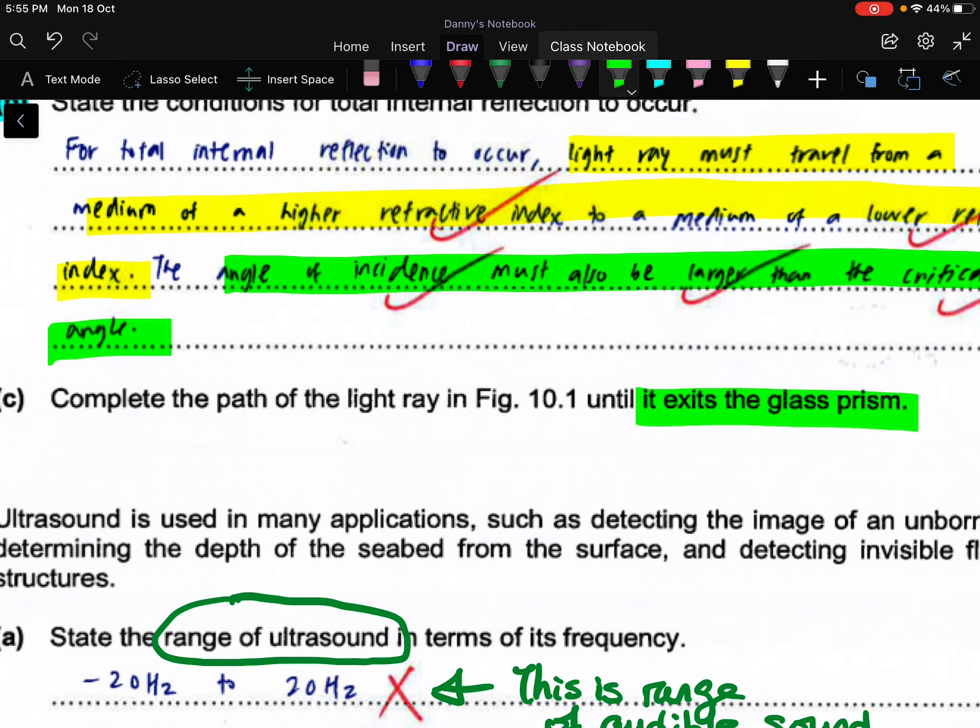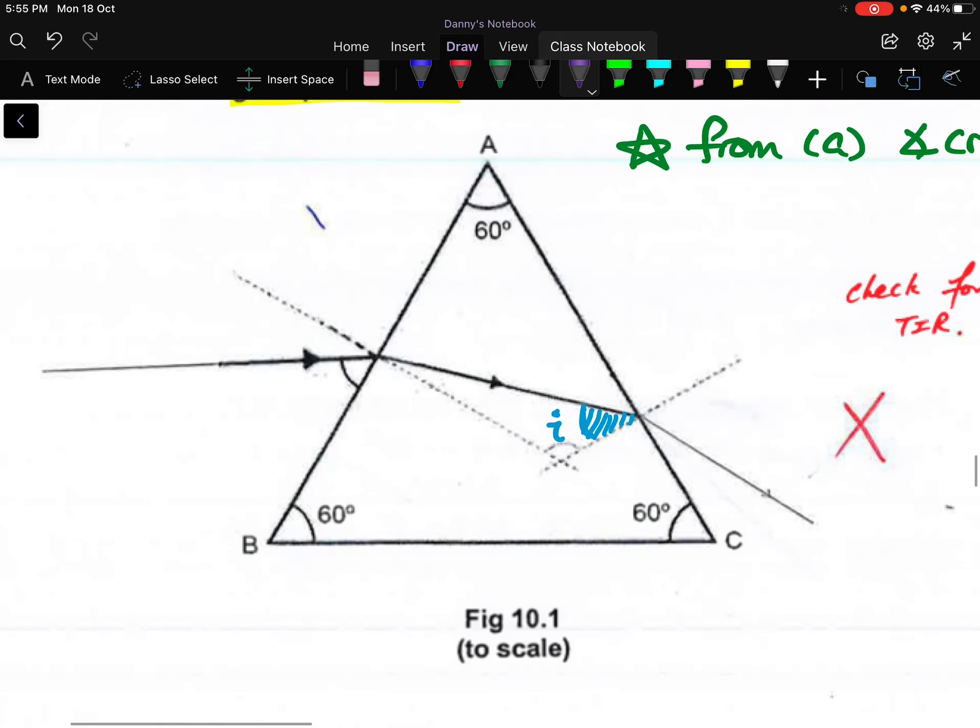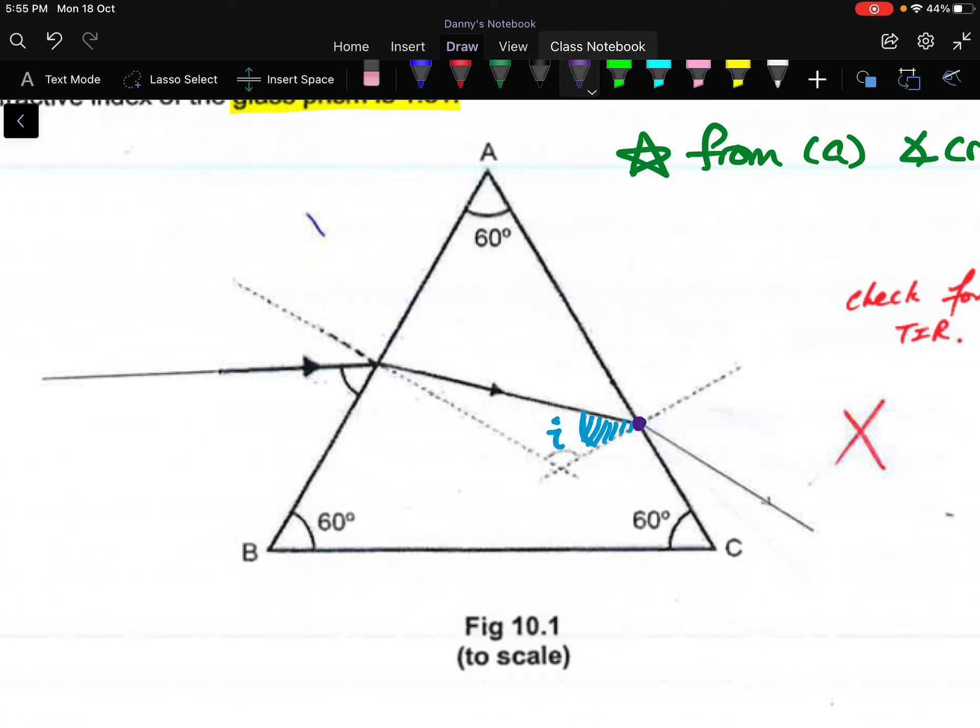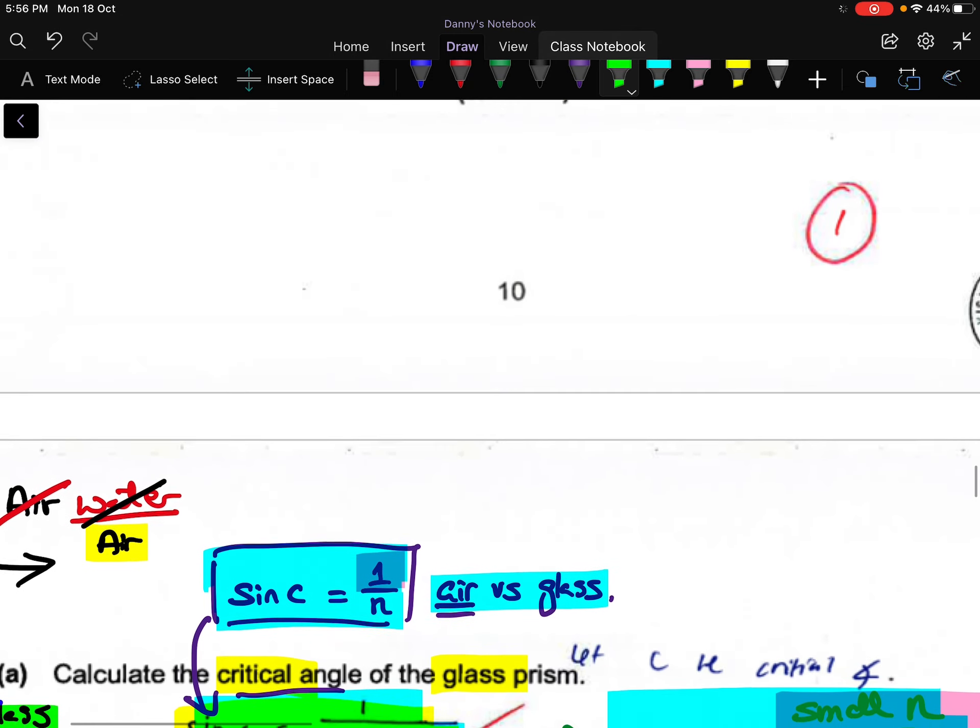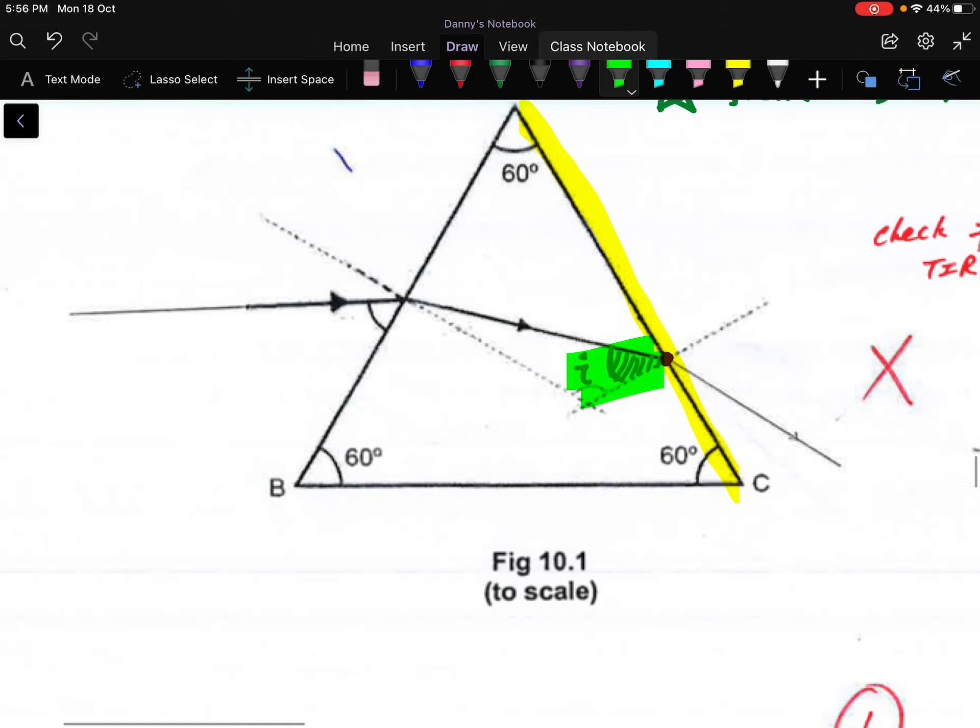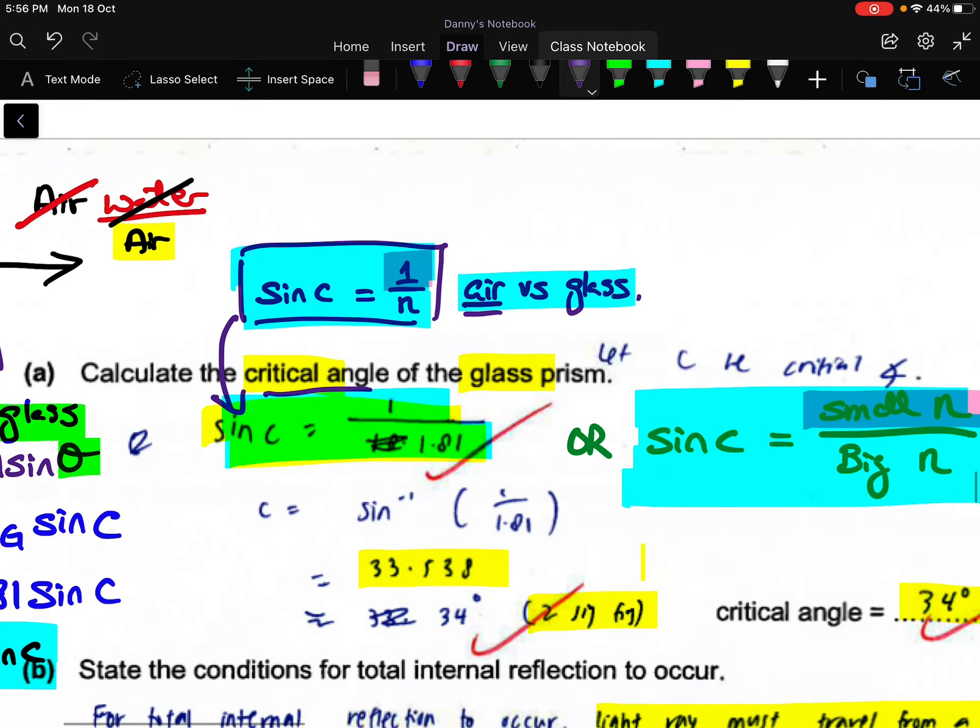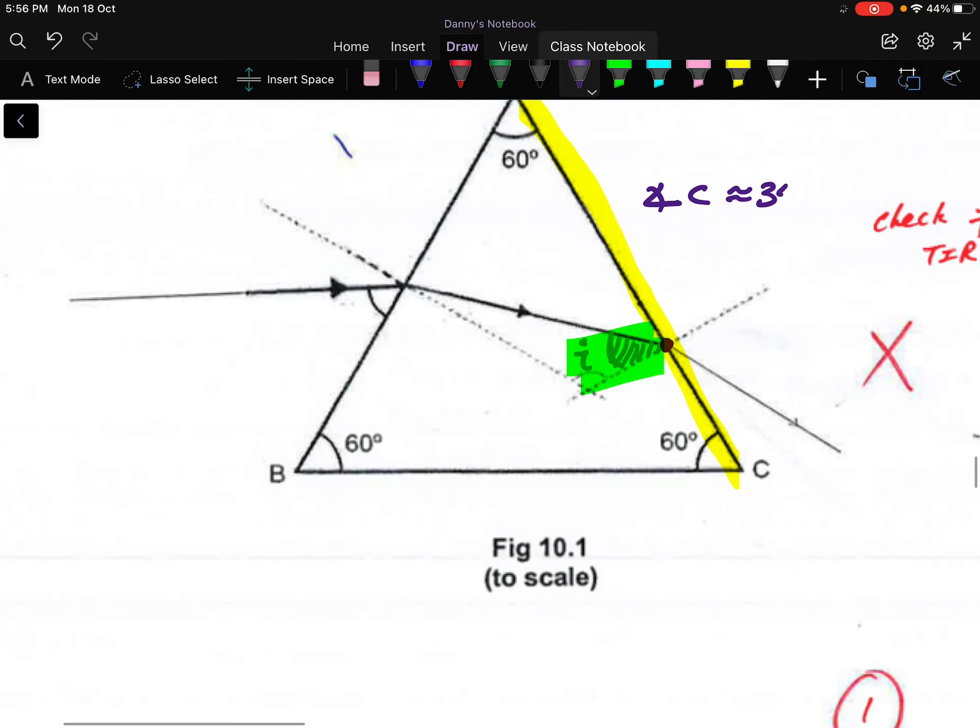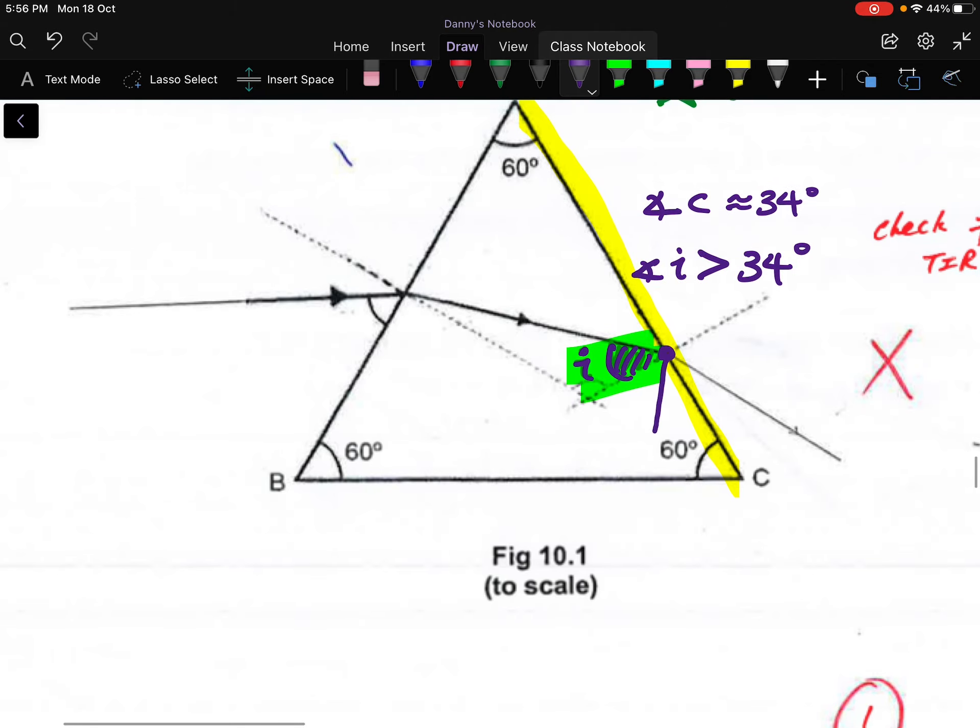For part c, you are being asked whether the light ray in Fig. 10.1 will exit the glass prism. I think the candidate automatically assumed that when it hits the boundary it will get out. But unfortunately, if you check at this point when the ray hits the boundary AC, it will actually make this angle i. If you use a protractor to measure i and compare with the critical angle C, from part a you will find that your critical angle is about 34 degrees. If you measure this particular angle, you will see that your angle i is larger than 34 degrees, meaning that this ray upon hitting the boundary AC will actually go through TIR (total internal reflection) and it will shoot this way.